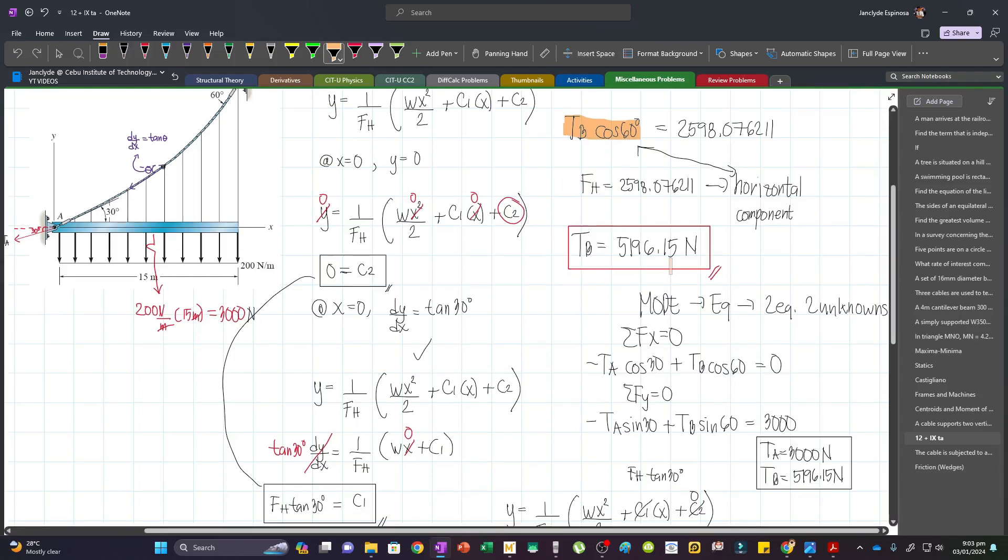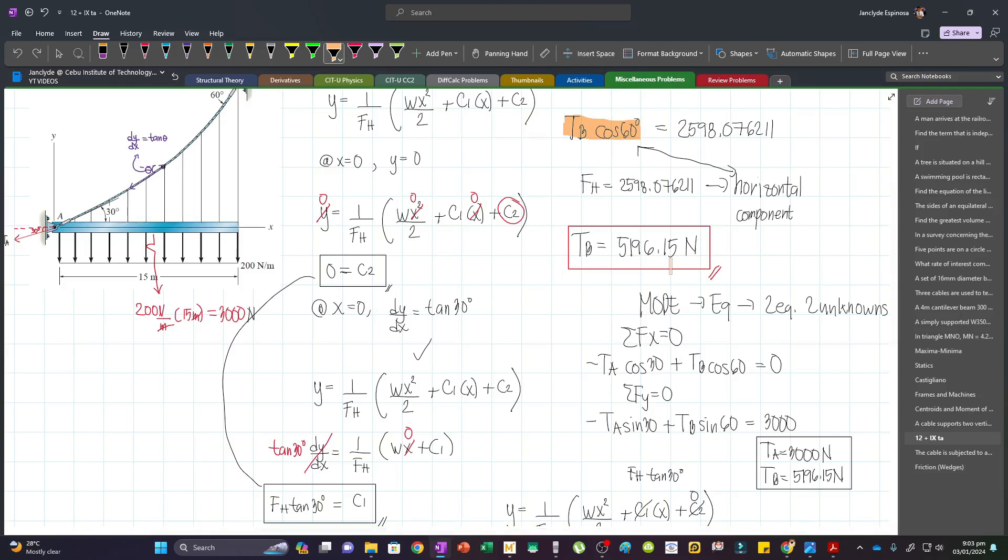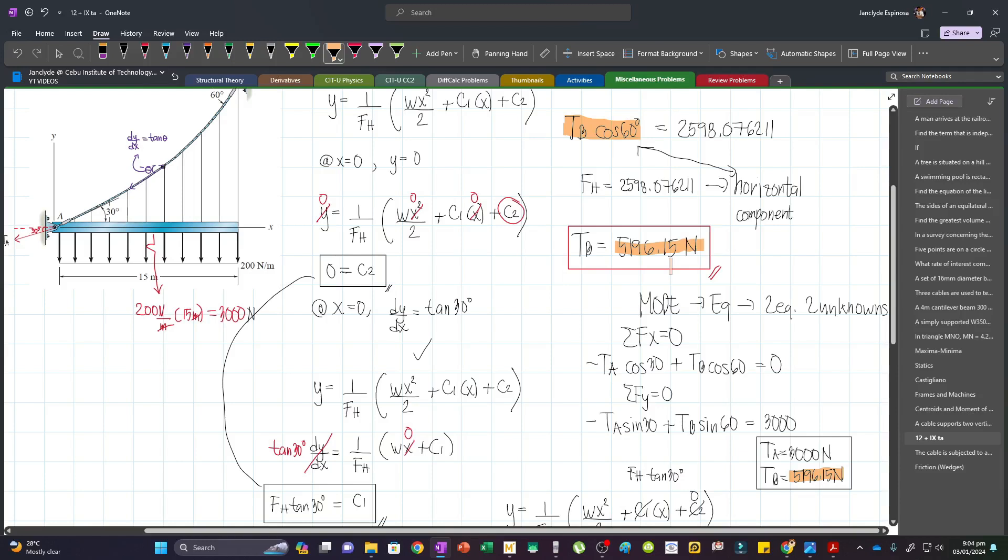As you can notice, we can solve the maximum tension just by using this one. Because this is the same as this one. That's how you can directly solve TB. Now you may use this one to check your answers.